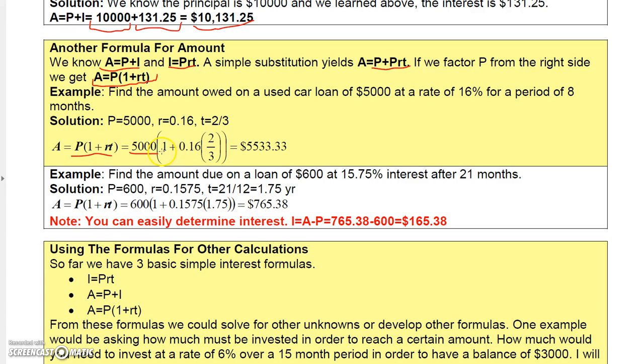See the parentheses. And then on the inside, you have 1 plus the rate in decimal 0.16 and the time, which is 2 thirds of a year. And if you put everything in this calculator exactly the way I have it here, make sure you put parentheses around the entire sum here, you'll get $5,533.33, which is actually what you would have gotten had you taken the 5,000 and added the $533.33.